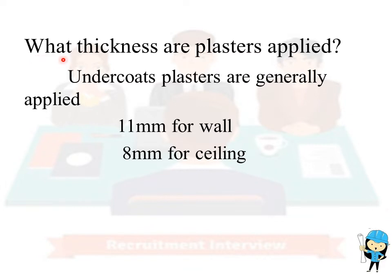The ninth question is: what thickness of plaster is applied as undercoat? Plasters are generally applied at 11 mm for walls and 8 mm for ceilings.